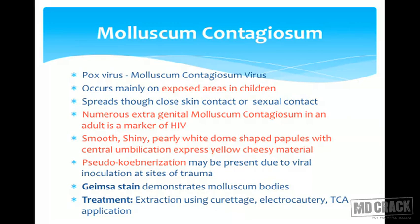Numerous extra-genital molluscum contagiosum in an adult is a marker of HIV. The lesions are smooth, shiny, pearly white dome-shaped papules with central umbilication — umbilication is a feature of viral infections. On squeezing the lesion there is expression of a yellowish cheesy material which contains the virus, and through auto-inoculation it can spread the infection.